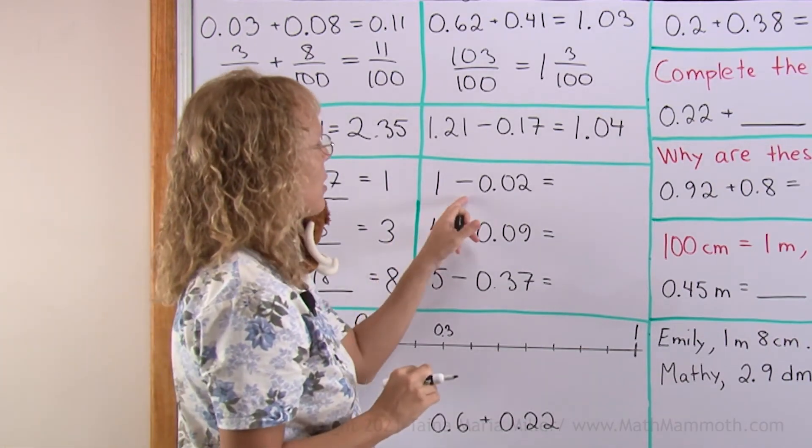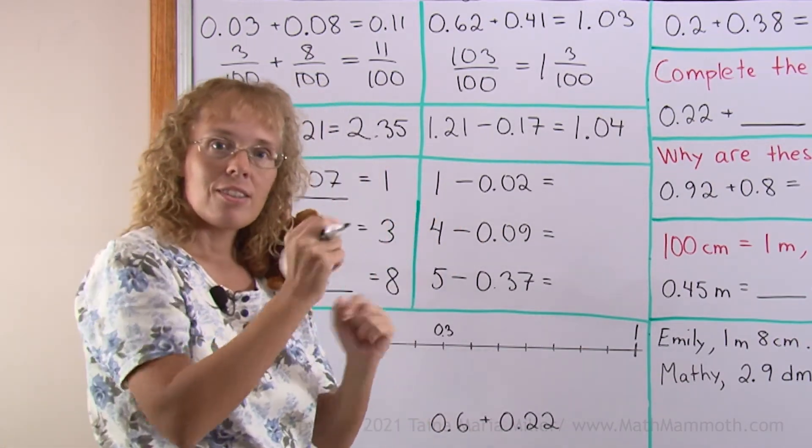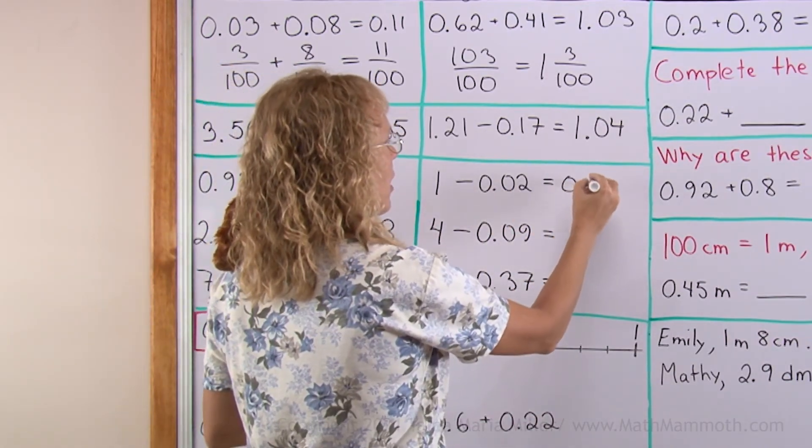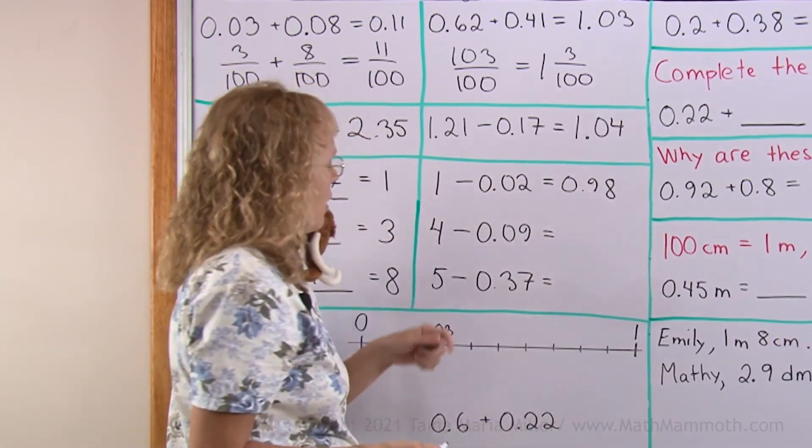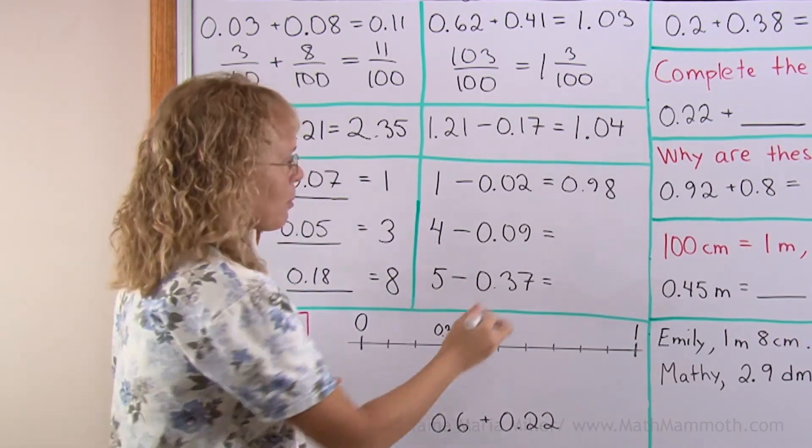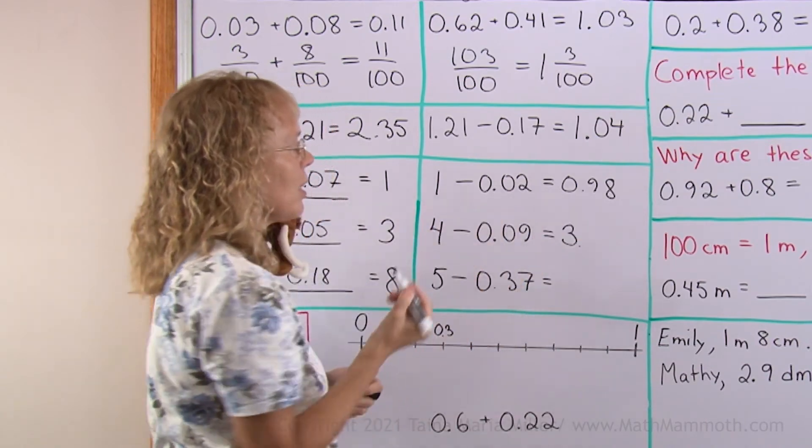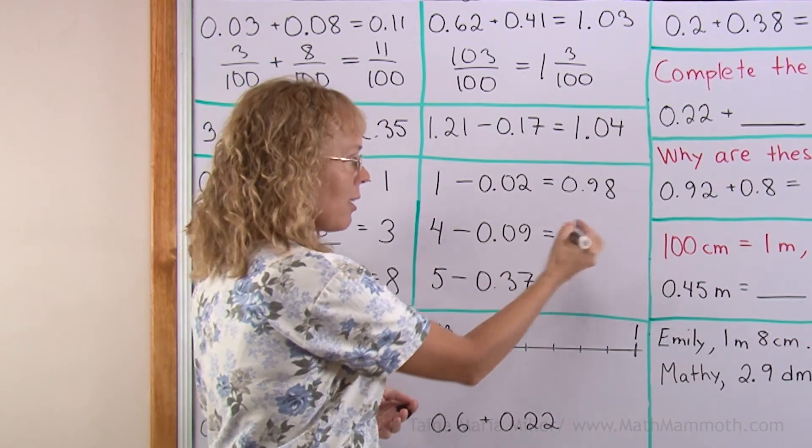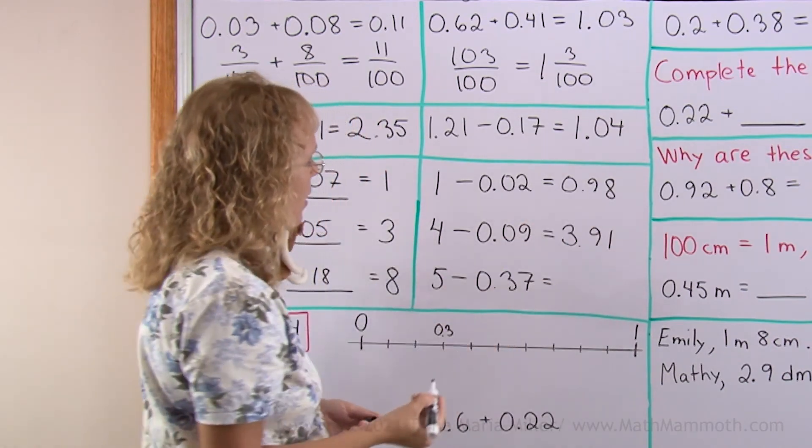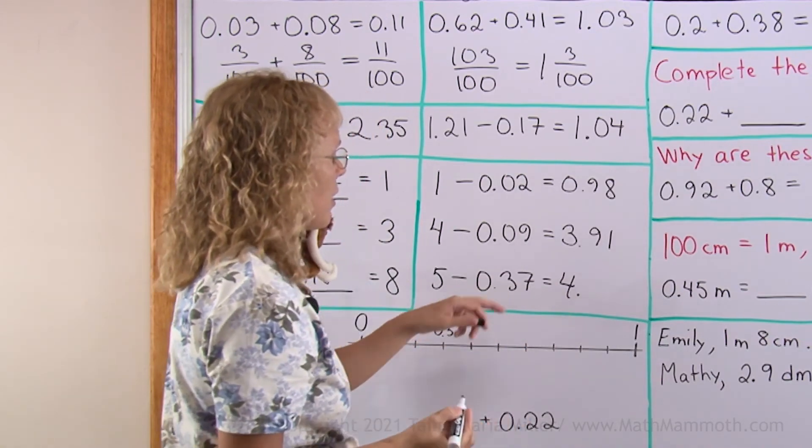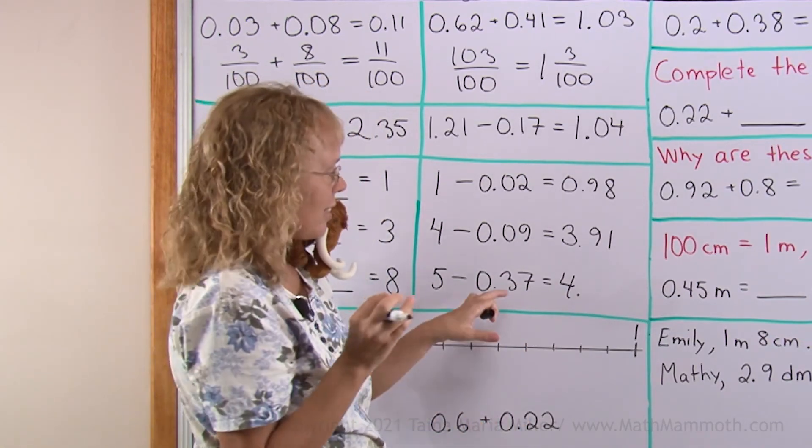Here one take away two hundredths. Just think of the one as hundred hundredths, take away two hundredths, so you have ninety-eight hundredths left. Or four take away nine hundredths. We will have three something, right? And to think of the hundred hundredths, take away nine hundredths, leaves you ninety-one hundredths here. Or similarly here, we will get four point, and then hundredths minus thirty-seven is sixty-three. That many hundredths.